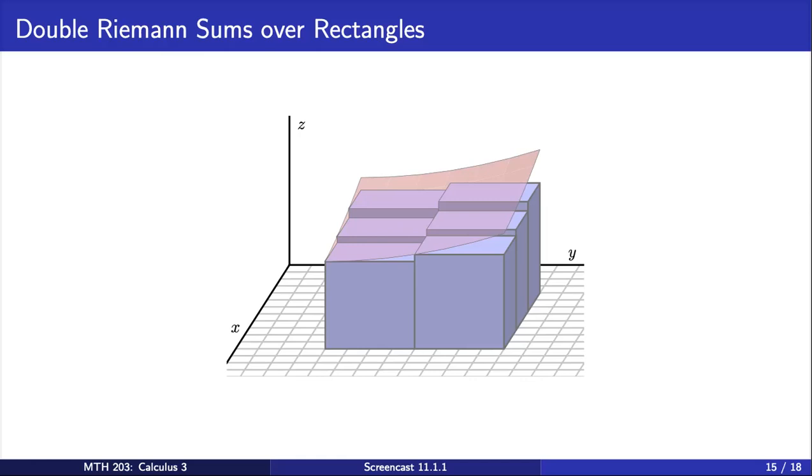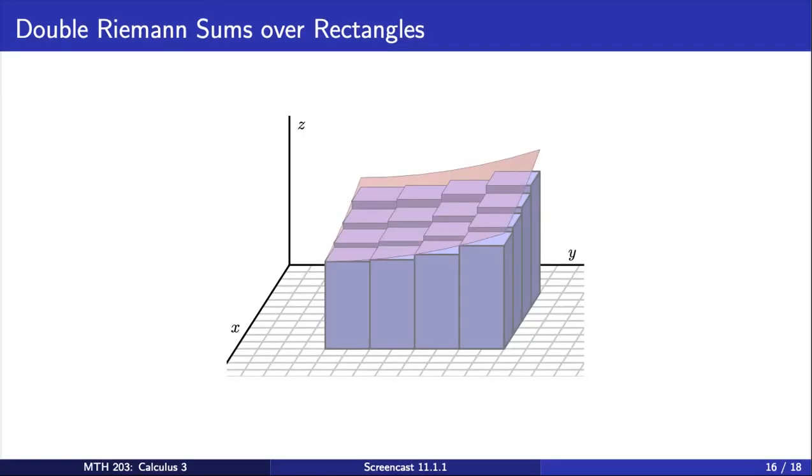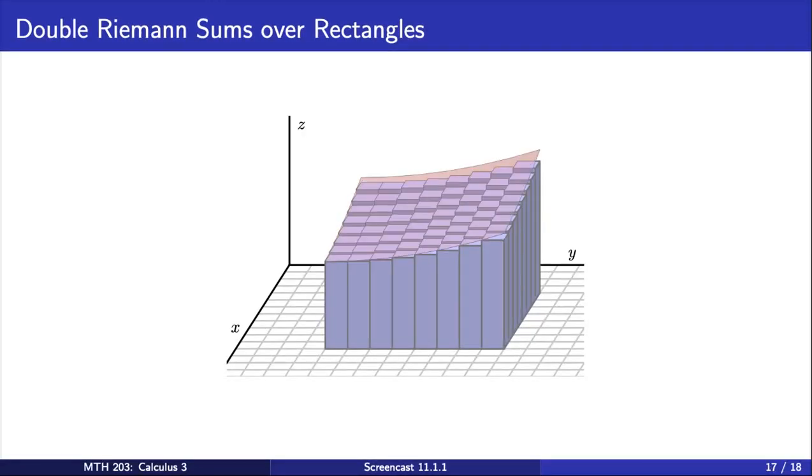Okay, so now using this double sum, as we increase the number of rectangular boxes without bound, our approximation gets closer and closer to the actual volume underneath the surface, as we see here.